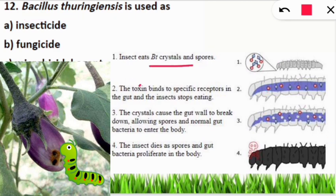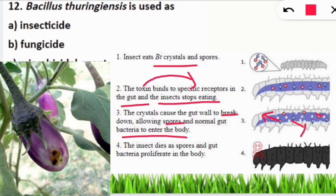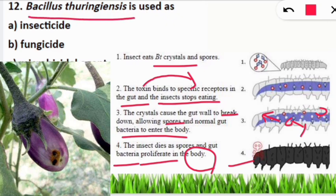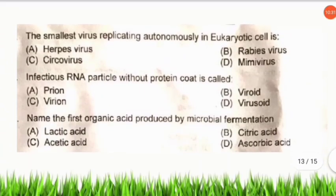The activated toxin binds to specific receptors in the insect gut, stopping the insect from eating the crops. The receptors then break down the gut wall, allowing spores and normal gut bacteria into the body. Pores form, enabling the bacterial gene to proliferate throughout the body, killing the insect. This is how Bt genes protect crops from insects.